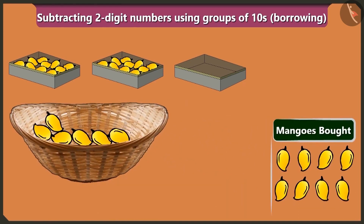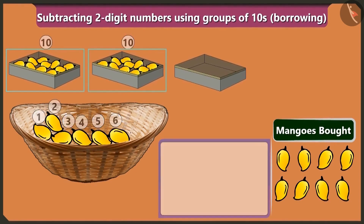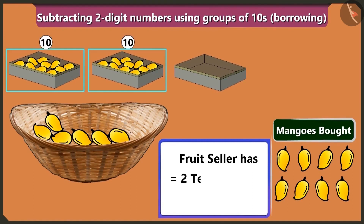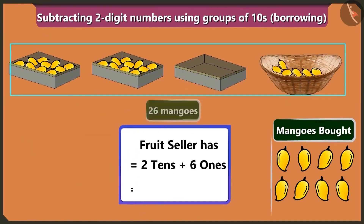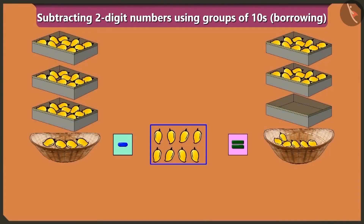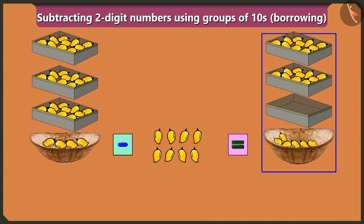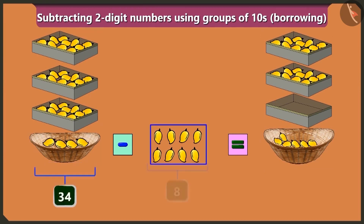The mango seller has only 4 loose mangoes — so how will he give us 8? I will empty one box of ten mangoes into the basket. Now there are 10 and 4 — 14 mangoes in the basket. If you buy 8 mangoes from the 14, there are 2 boxes of 10 mangoes each and 6 mangoes in the basket, so the fruit seller has 2 tens and 6 ones — 26 mangoes left.